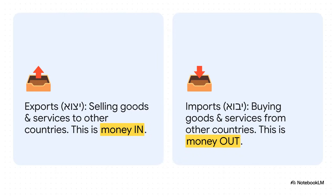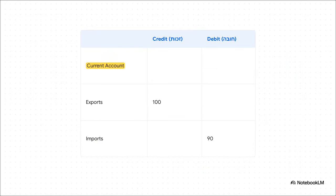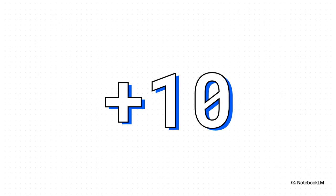The biggest piece of the current account is the trade of goods and services. When our country sells something to another country — an export — money comes in, so we log that as a credit. When we buy something from another country — an import — money goes out, logged as a debit. For example, if we export $100 million, that's a credit of 100, and import $90 million, that's a debit of 90. Subtracting debits from credits gives us a positive $10 — a trade surplus. If that number were negative, we'd call it a trade deficit.